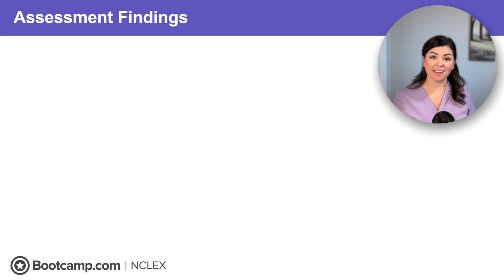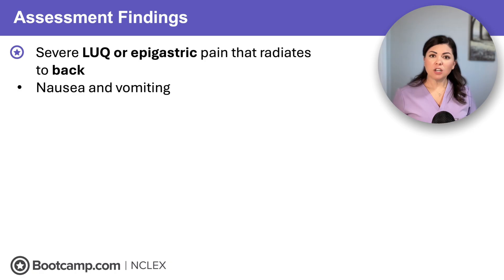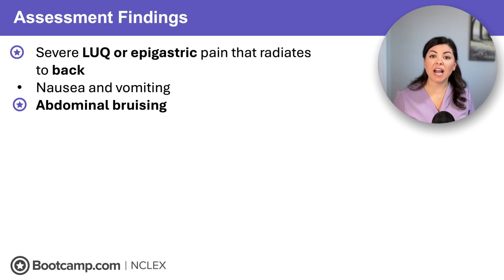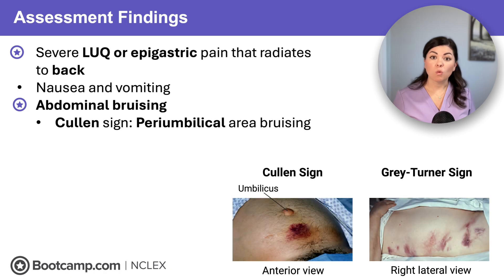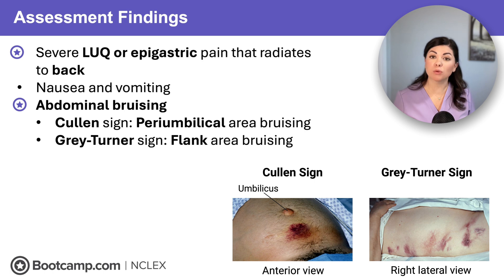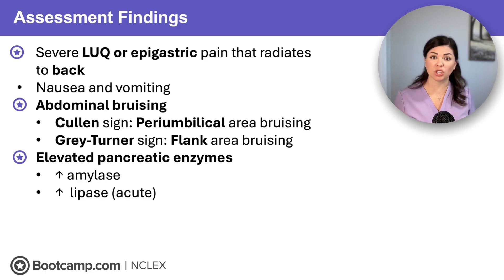With pancreatitis, we expect severe left upper quadrant or epigastric pain that radiates to the back. We'll also see nausea, vomiting, and bruising caused by leaking pancreatic enzymes that digest tissue and blood vessels, resulting in internal bleeding and bluish discoloration. Specific bruising patterns include Cullen sign — bruising to the periumbilical area — and Grey Turner sign — bruising to the flank area. Labs will reveal elevated pancreatic enzymes like amylase and lipase, especially with acute pancreatitis.